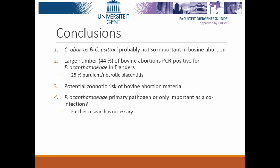In conclusion, Chlamydia abortus and Chlamydia psittaci are probably not so important in bovine abortion in Flanders. There is a substantial number of bovine abortions that were PCR-positive for Parachlamydia in Flanders, but only one in four samples showed purulent or purulent necrotic placentitis. It is also important to mention that chlamydia and parachlamydia are zoonotic agents, so we must acknowledge the potential zoonotic risk of bovine abortion material. Based on our study design, it is very difficult to determine whether Parachlamydia is a primary pathogen or only important as a co-infection. Further research is necessary.